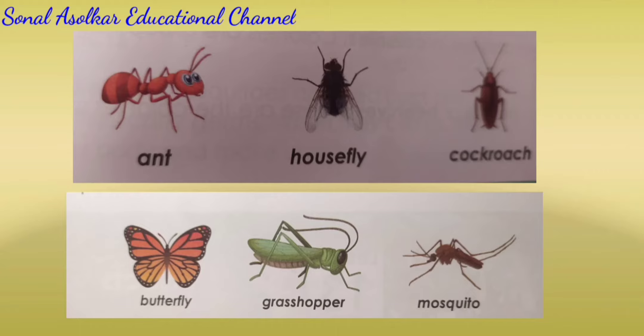We see many such small animals in and around our house. Do you know their names? Ant, housefly, cockroach, butterfly, grasshopper, mosquito. These small animals are called insects. They creep and crawl. They have six legs.